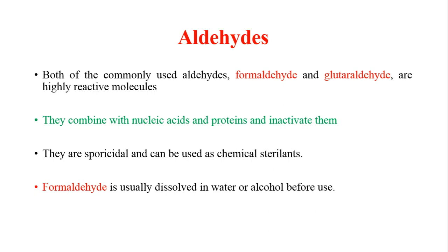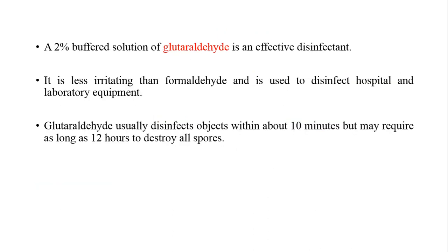Formaldehyde is used for fumigation of labs to kill all types of microorganisms. It is usually dissolved in water or alcohol before use. At a 2% buffered solution, glutaraldehyde is an effective disinfectant. Compared to formaldehyde, glutaraldehyde is less irritating and can be used in hospitals and laboratories for disinfection. Glutaraldehyde usually disinfects objects within about 10 minutes but may require as long as 12 hours to destroy all spores.